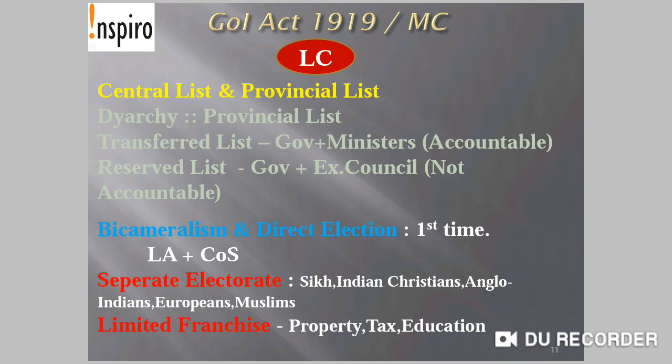The Transferred List meant the Governor needed to be accountable to the legislature and had to adhere to the ministers' advice. In the Reserved List, the Governor could take decisions through Executive Council deliberation and was not accountable to the Legislative Council for actions taken under subjects in the reserved list. For the first time in India, bicameralism — two houses — were introduced at the central level: the Legislative Assembly and the Council of State.